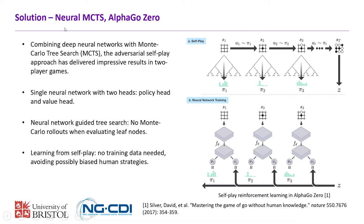We introduce neural MCTS, the algorithm running behind our bin packing problem. Neural MCTS is used in AlphaGo Zero — it's a combination of deep neural networks with Monte Carlo tree search. Because AlphaGo Zero is a two-player adversarial game, we use the benefit of the self-play adversarial approach, but with only one agent, so we introduce another mechanism called Ranked Reward. For more details, please refer to our paper.